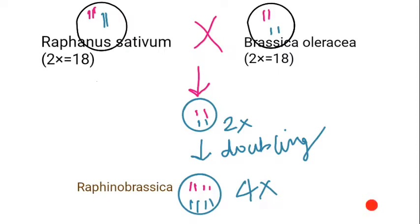After doubling of the chromosomes, it becomes Raphanobrassica, which is tetraploid in nature. Each chromosome will now have its own homologous chromosome, proper synapsis will occur during meiosis, and that leads to the formation of an organism able to produce proper gametes. The Raphanobrassica variety is therefore not sterile, unlike the diploid hybrid.